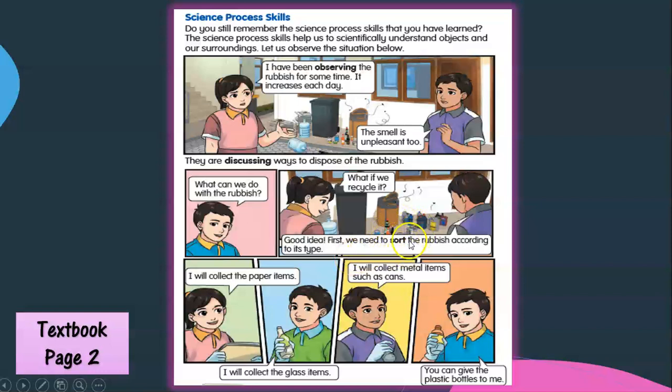Okay class, what is sort? Sort means yes, classify. You need to classify the rubbish, then you can do the recycling. So the girl collects the paper items. The boy collects the glass items, and another boy collects the metal items such as cans. And you can give the plastic bottles to me. Okay, this boy collecting the plastic bottles. So you can see how they classify the rubbish before they do recycling.